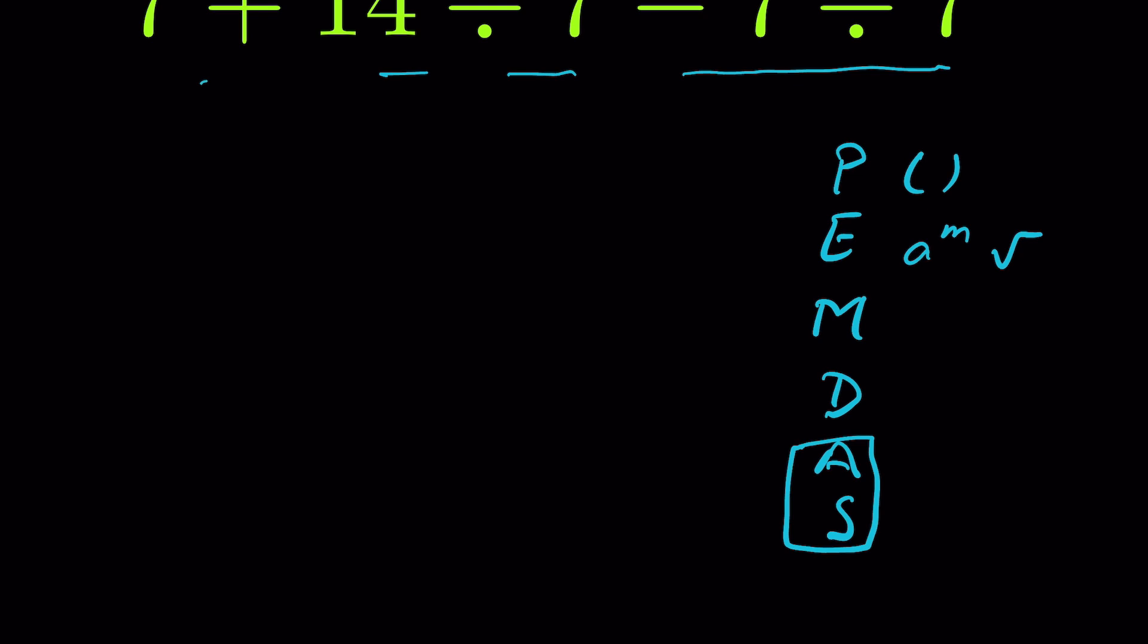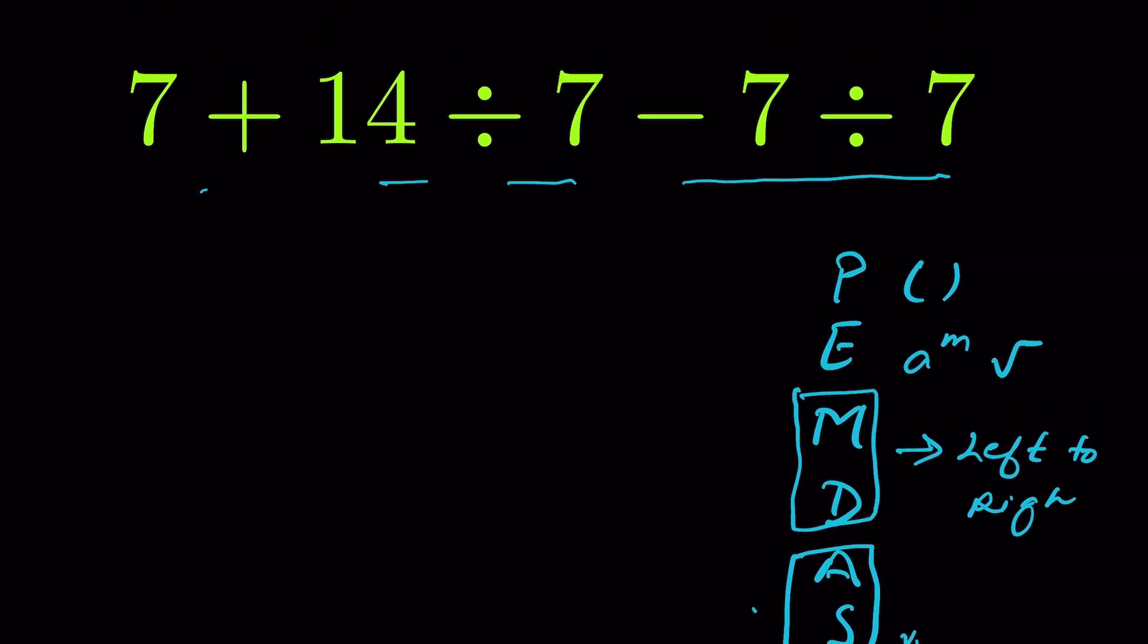are after multiplication and division. We have grouped them together - multiplication and division - because they have equal priority, and we solve them from left to right, whichever comes first. Same goes for addition and subtraction. But always remember that addition and subtraction will be after multiplication or division. So this addition will not be done first; it will be written as it is.